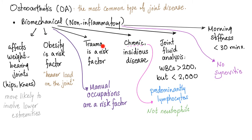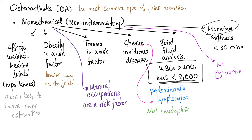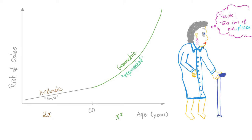Since it's biomechanical, it affects the weight-bearing joints. Obesity is a risk factor. Trauma is a risk factor. Manual occupation is a risk factor. It's a chronic disease. Joint fluid will have white blood cells that are not normal, but still less than 2000 — less than inflammatory. Morning stiffness lasts less than 30 minutes because it's non-inflammatory. No synovitis. The older you get, the greater your risk of osteoarthritis; it starts linear then goes exponential.